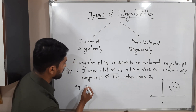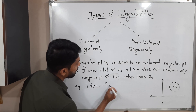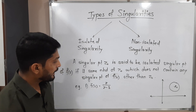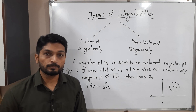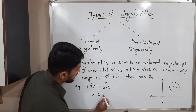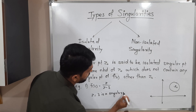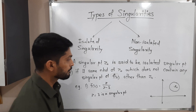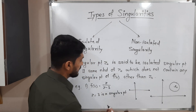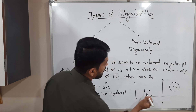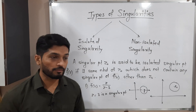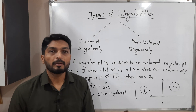Let us discuss one example: f(z) = z/(z-3). The singular point is where the denominator is zero — at z = 3. So z = 3 is a singular point. Since it is the only singular point, we can definitely find some circle around 3 on the real axis which does not contain any other singular point of f(z). Therefore, z = 3 is an isolated singularity.